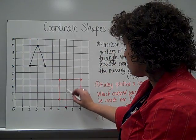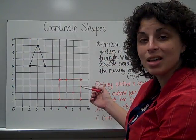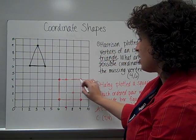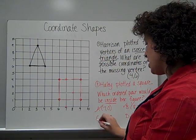Seven, four. Seven, four. Now that was close, but notice it's along that outside of the square. It's right along that segment that's already there. So that's not inside the shape.